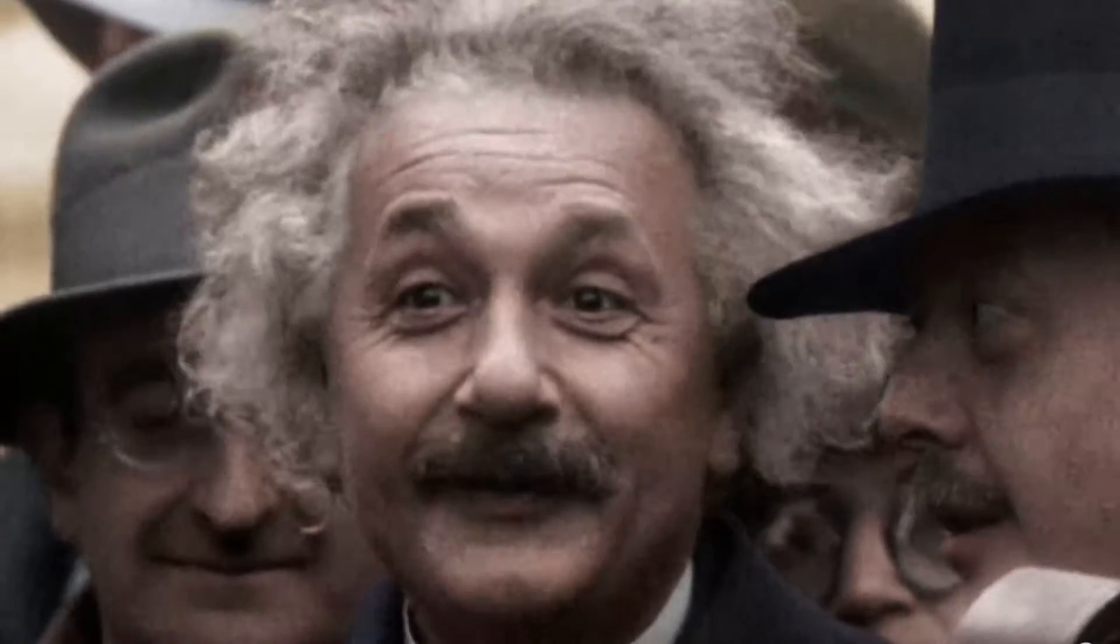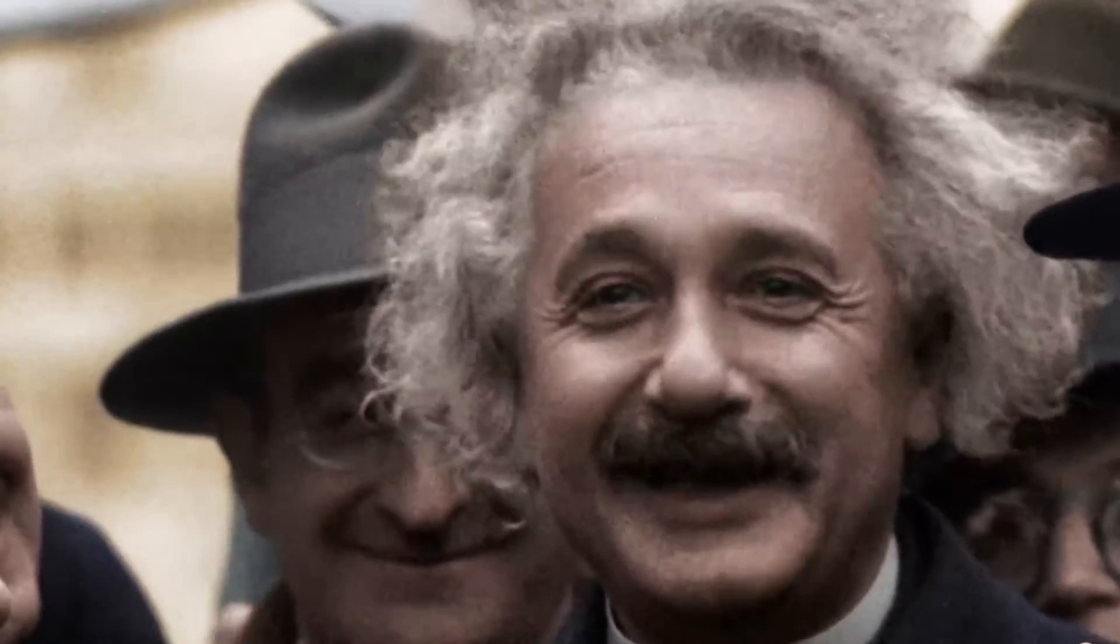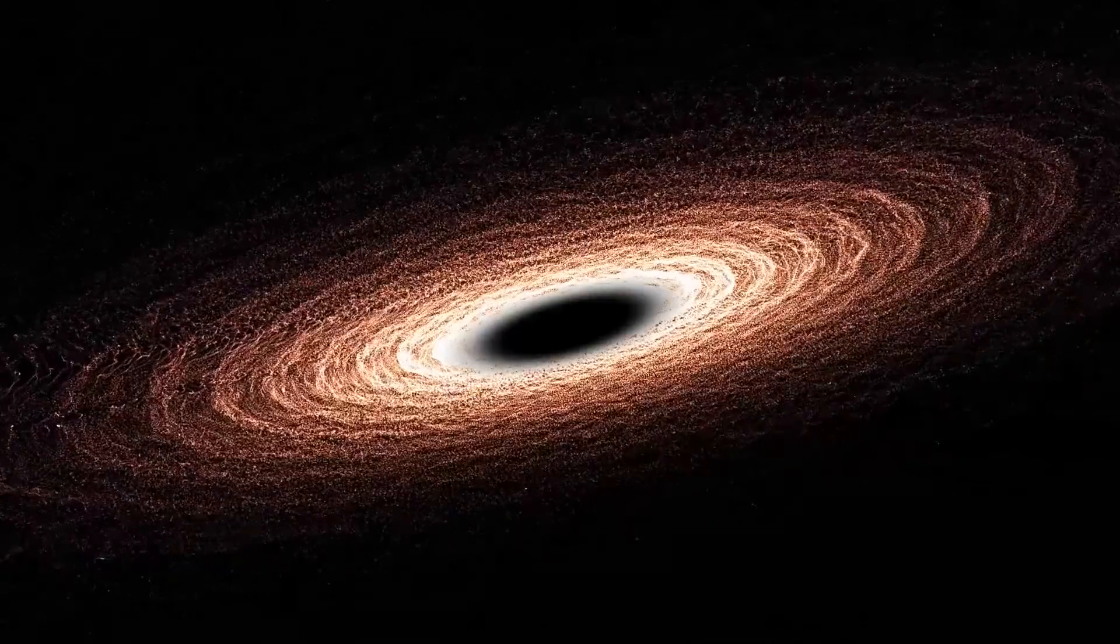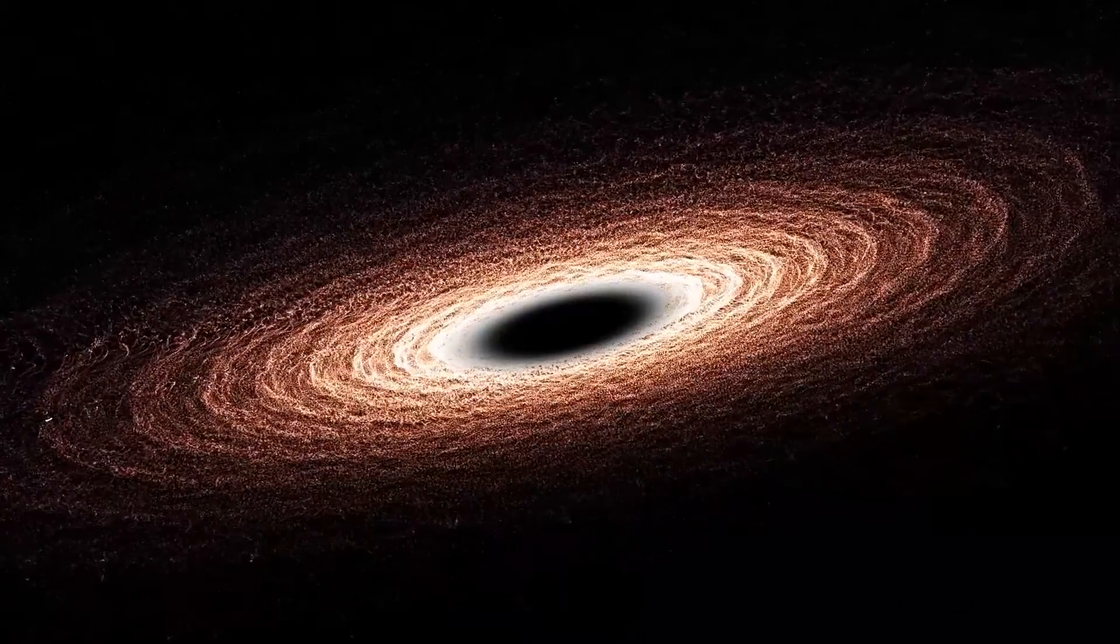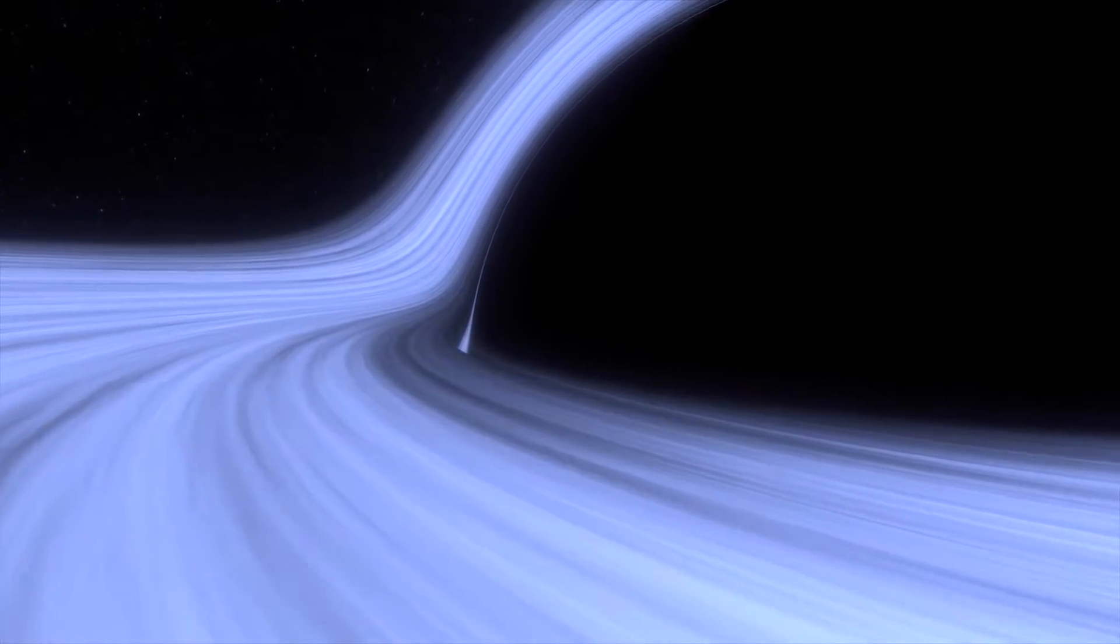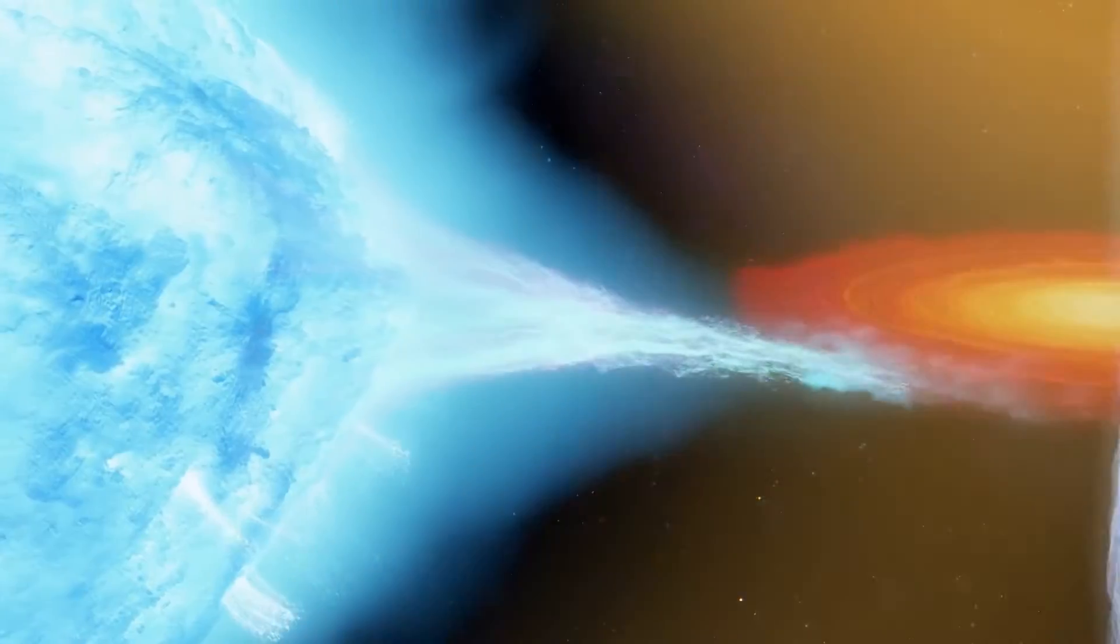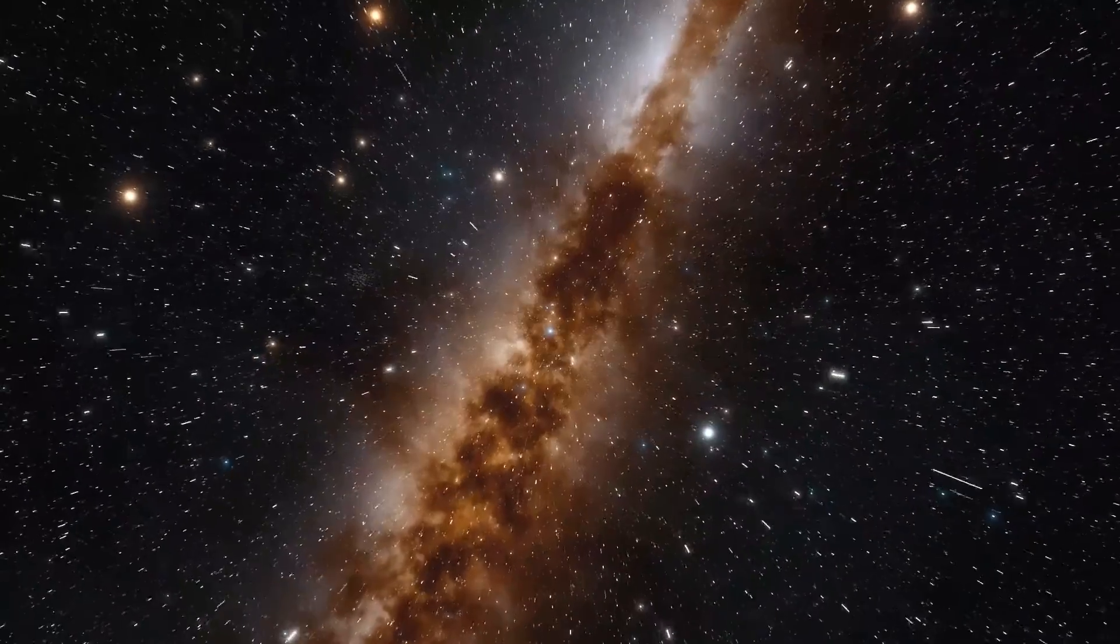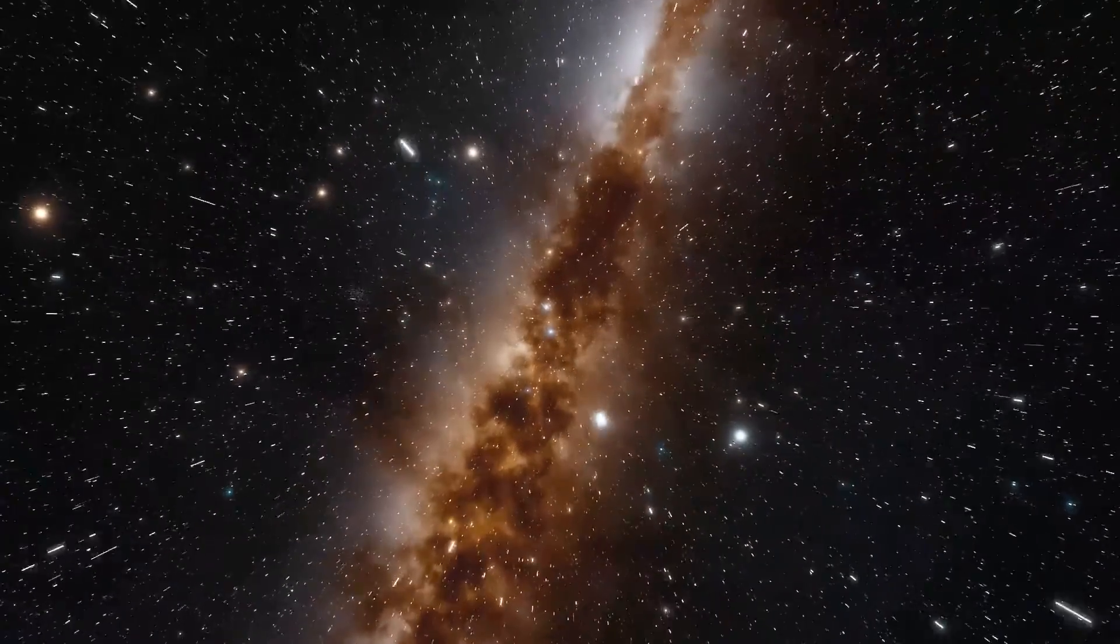Albert Einstein first predicted the existence of black holes in 1916 with his general theory of relativity. The term black hole was coined many years later in 1967 by American astronomer John Wheeler. After decades of black holes being known only as theoretical objects, the first black hole ever discovered was Cygnus X-1, located within the Milky Way in the constellation of Cygnus, the Swan.